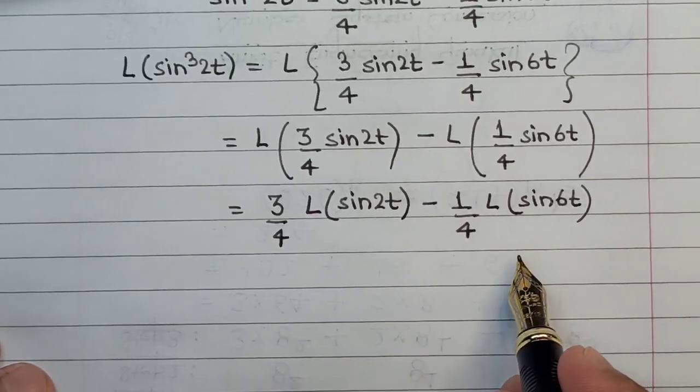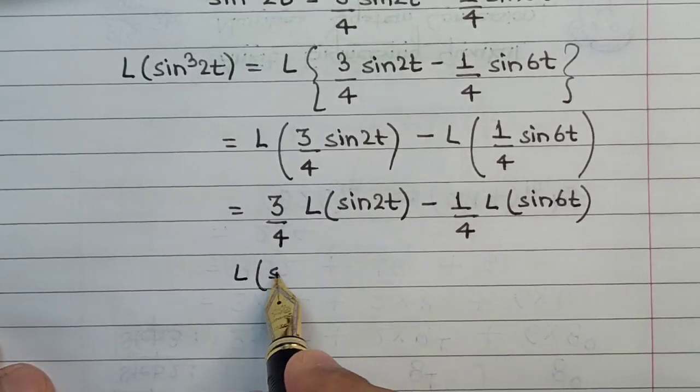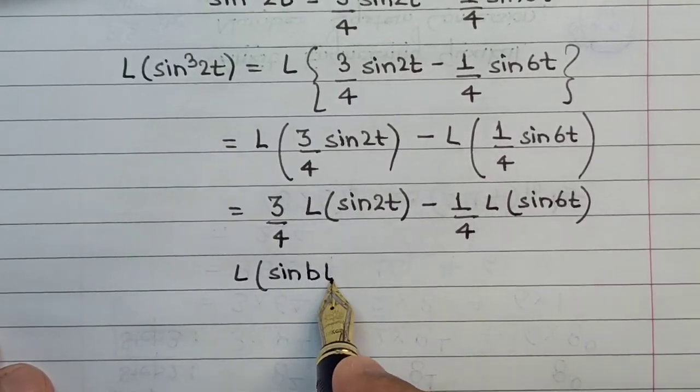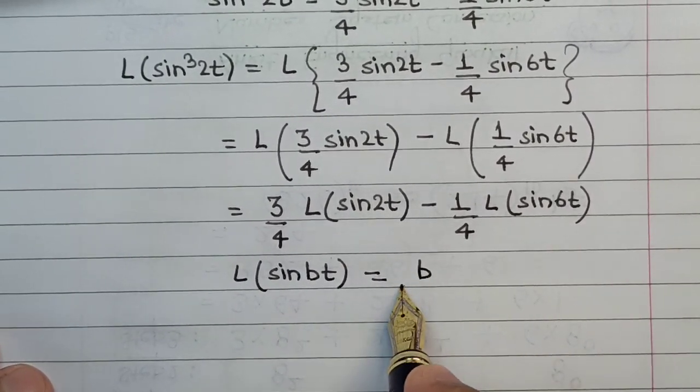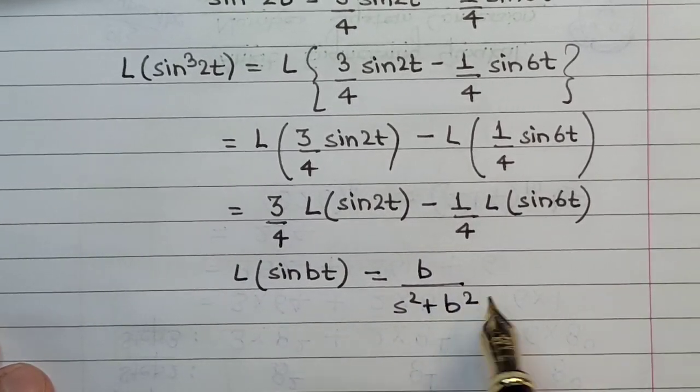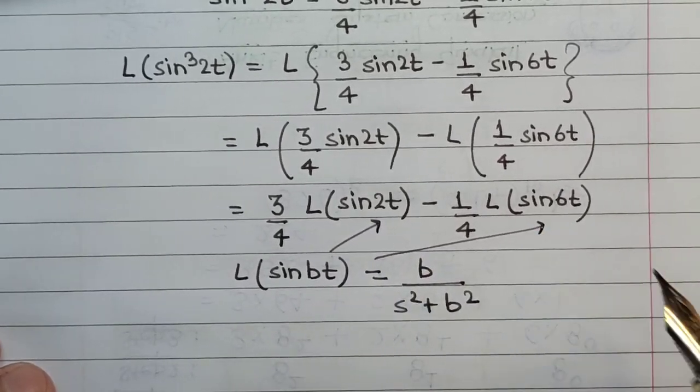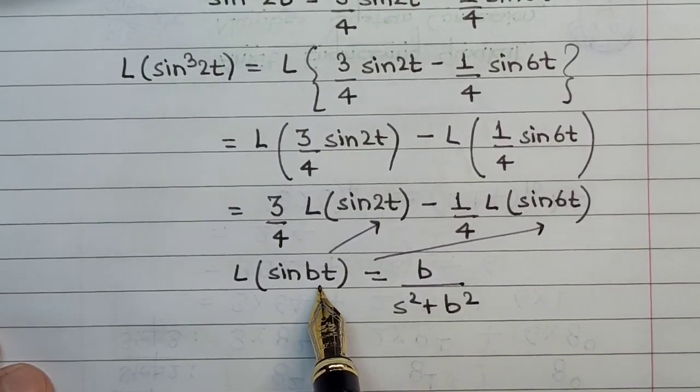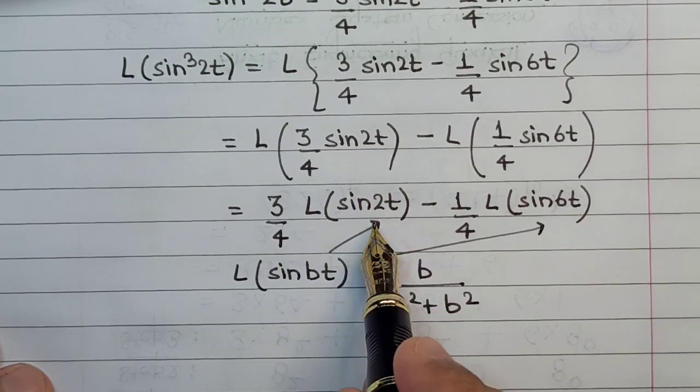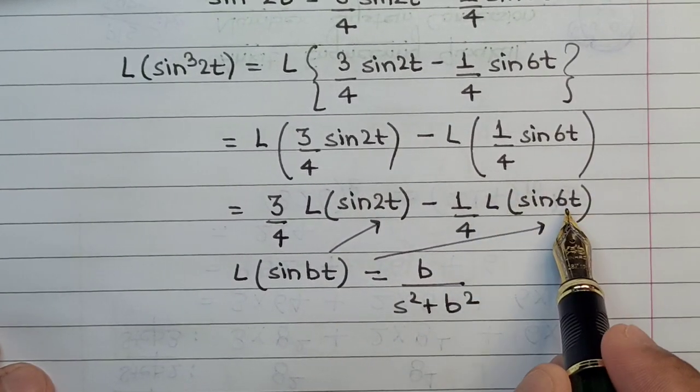Now we will directly apply the formula for sine t Laplace. We know that the formula for Laplace transform of sine bt can be taken as b upon s square plus b square. This is the formula that can be applied to this part as well as to this part here. The value of b while applying this formula in this part will be taken as 2, and the value of b while applying in this part will be 6.